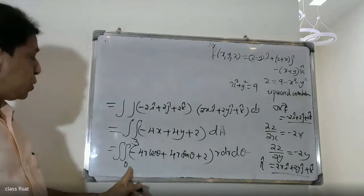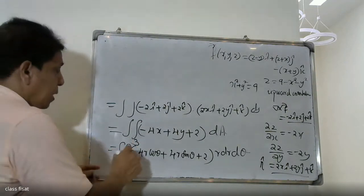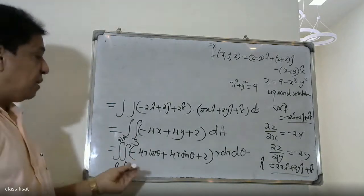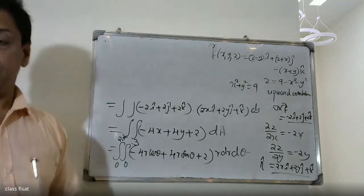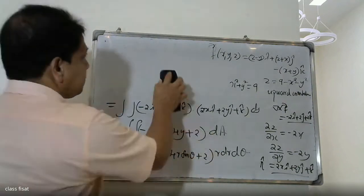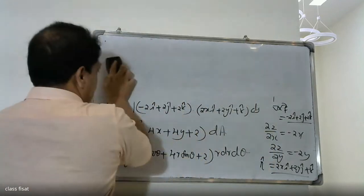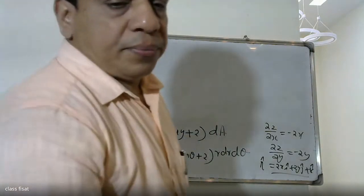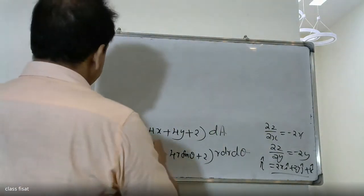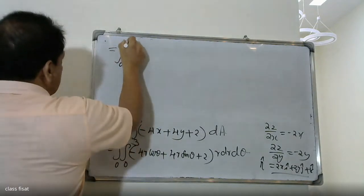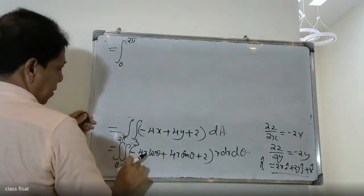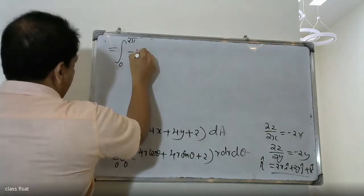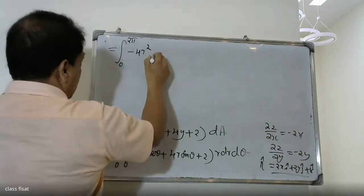The lower limit is 0, and this is a simple answer. The theta limit is 0 to 2pi, and r's limit is 0 to 3. This is equal to the integral from 0 to 2pi of minus 4r cos theta minus 4r squared cos theta.